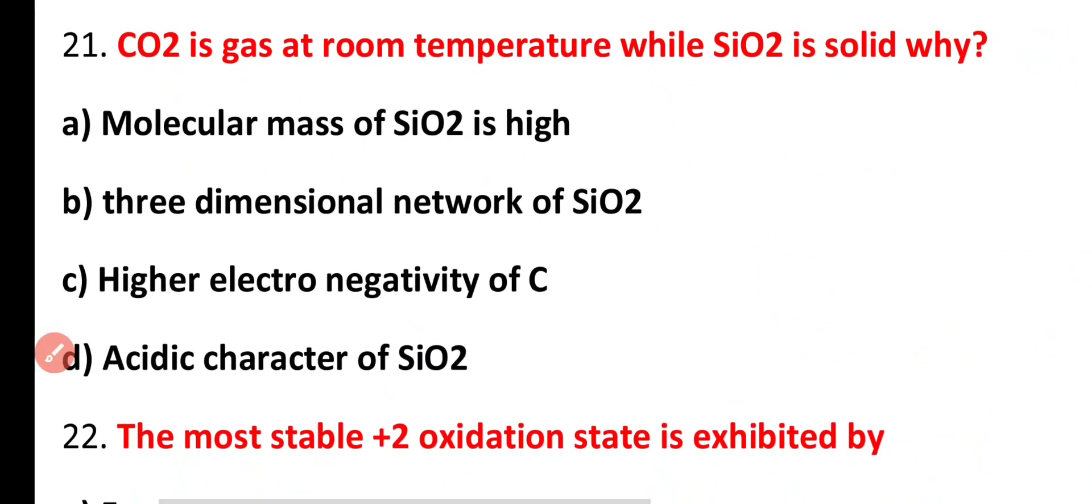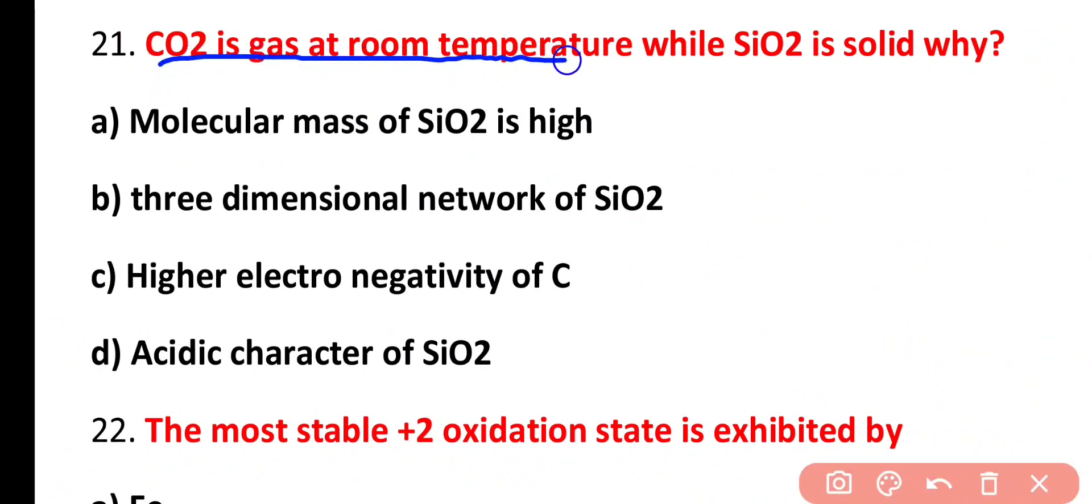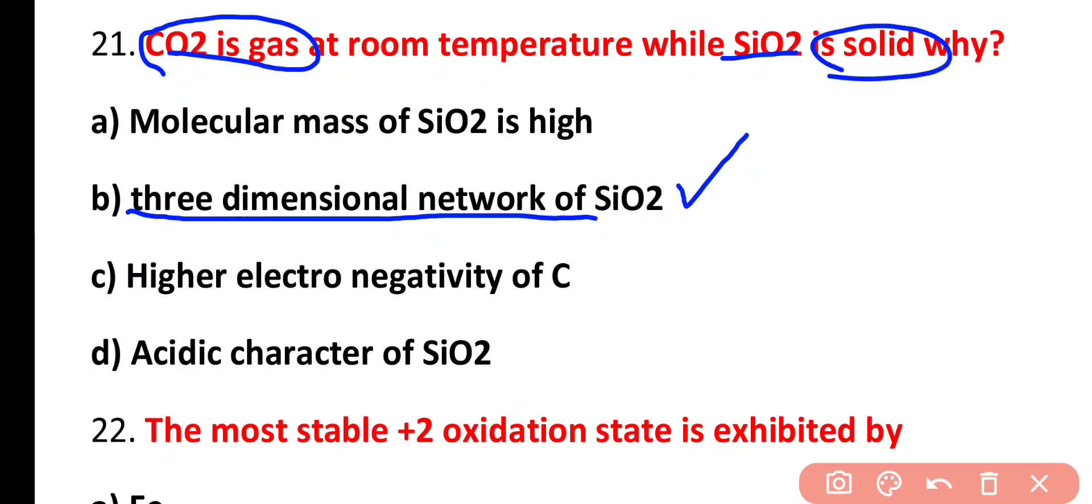Question number 21. Carbon dioxide is gas at room temperature, while silicon dioxide is solid. Why? Molecular mass of silicon dioxide is high, three-dimensional network of silicon dioxide, due to higher electronegativity of carbon or acidic character of silicon dioxide. Correct answer is option B. Carbon can form double bonds with oxygen, while silicon cannot form double bonds with oxygen. Carbon structure is simple, while silicon dioxide is a giant molecular structure with three-dimensional network. That's why silicon dioxide is solid at room temperature while carbon dioxide is gas.